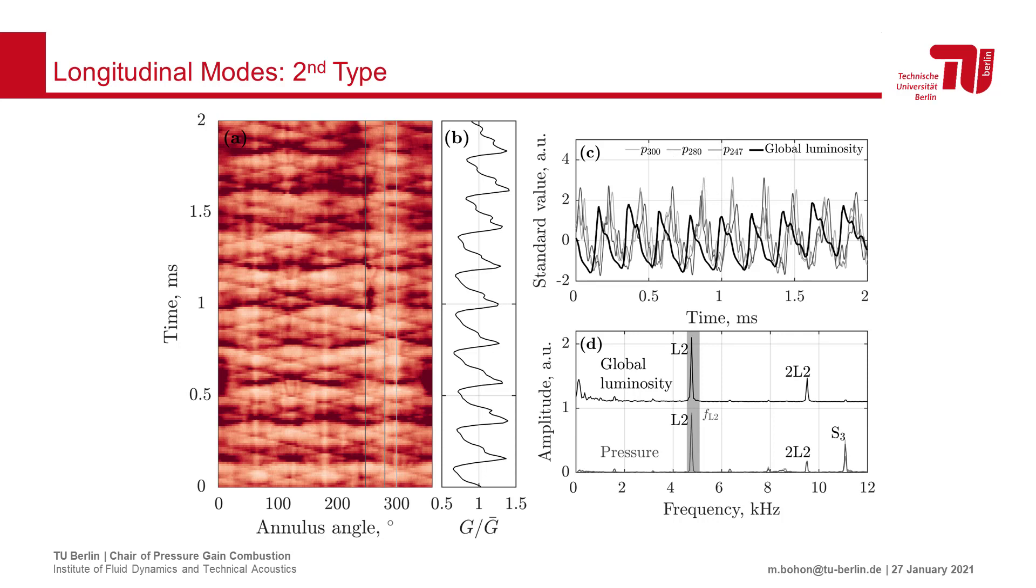In the Fourier spectrum, the luminosity and pressure spectra have peaks at the same frequency, around 5 kHz, which coincides well with the estimated half wave frequency, L2.